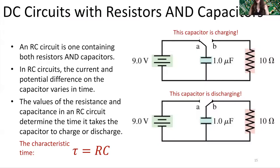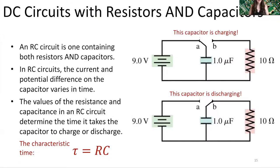Now we're going to talk about circuits that have resistors and capacitors together. An RC circuit is one that contains both resistors and capacitors. In RC circuits, the current and potential difference on the capacitor varies in time, and there are equations that describe this. The values of the resistance and capacitance determine the time it takes the capacitor to charge or discharge. We have something called the characteristic time, represented by the Greek letter tau, which equals the total resistance times the total capacitance, however they're arranged.